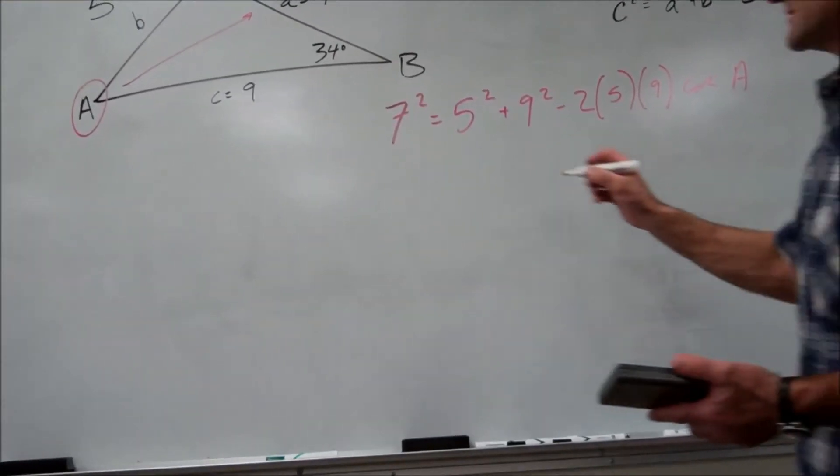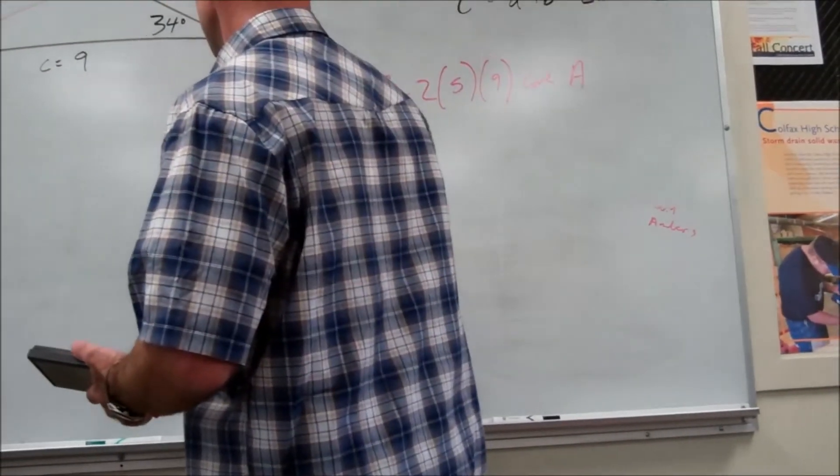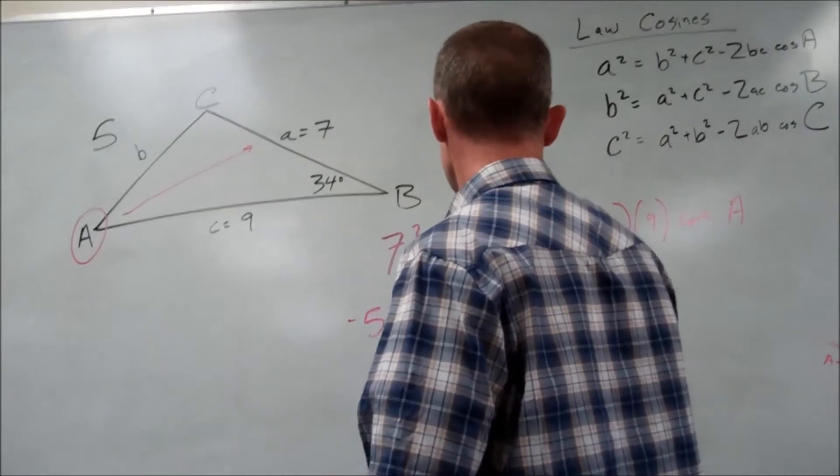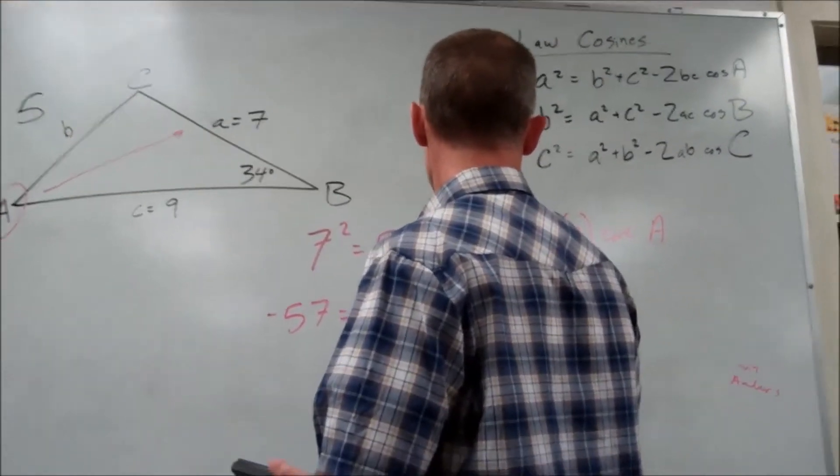So this is negative 57 equals negative 2, 5, 9, cosine of A.